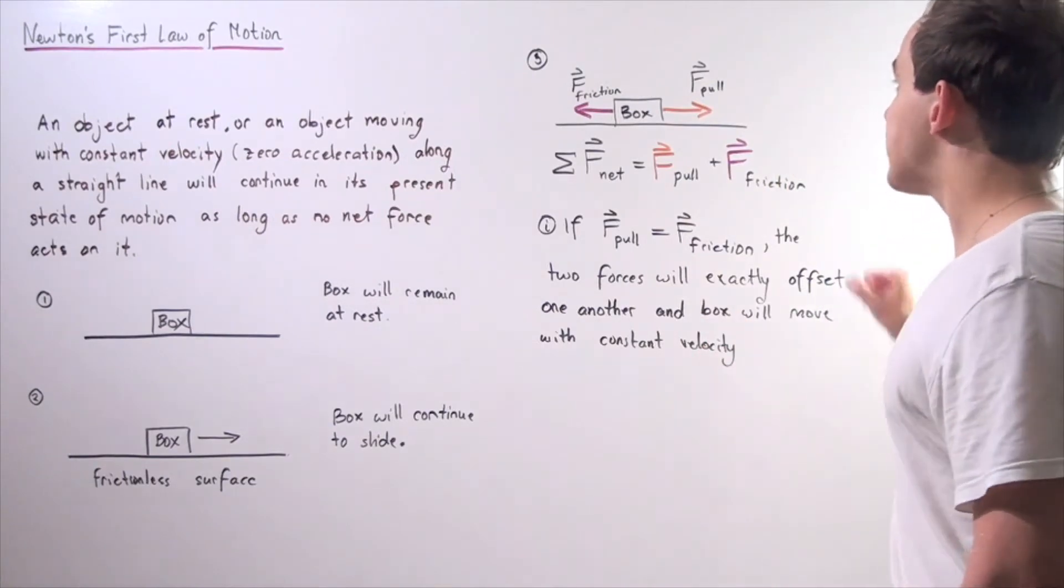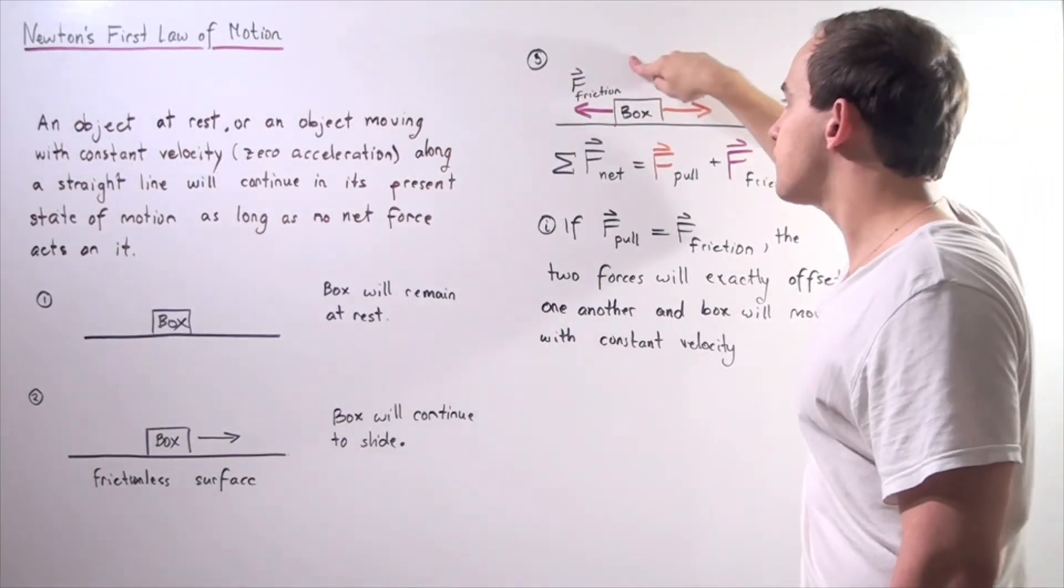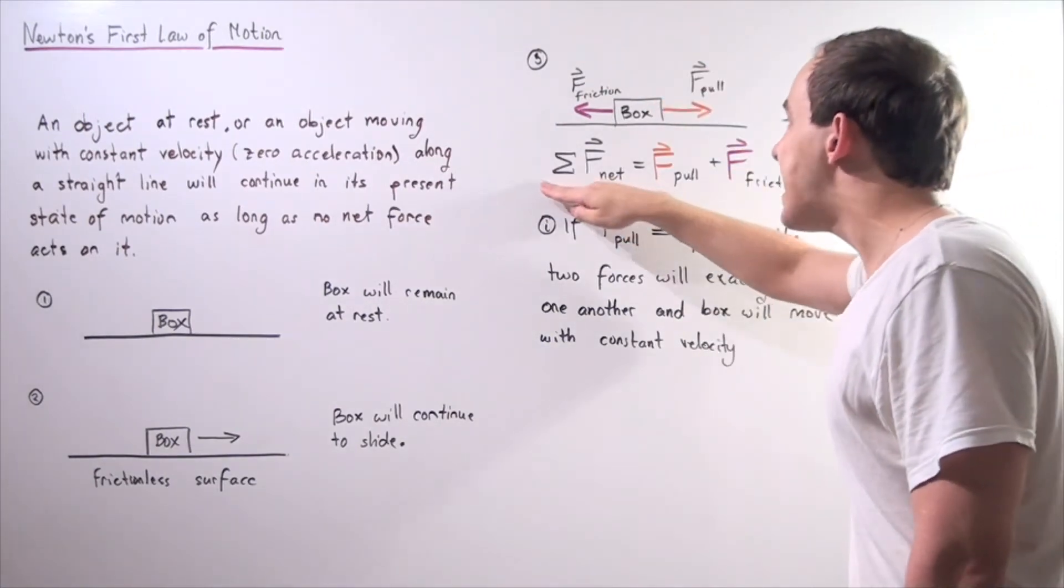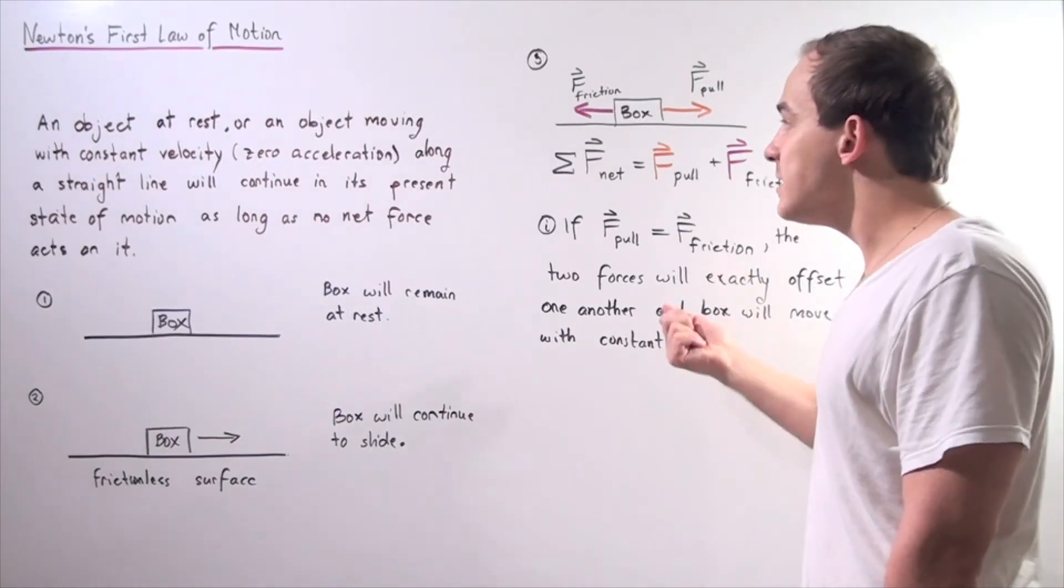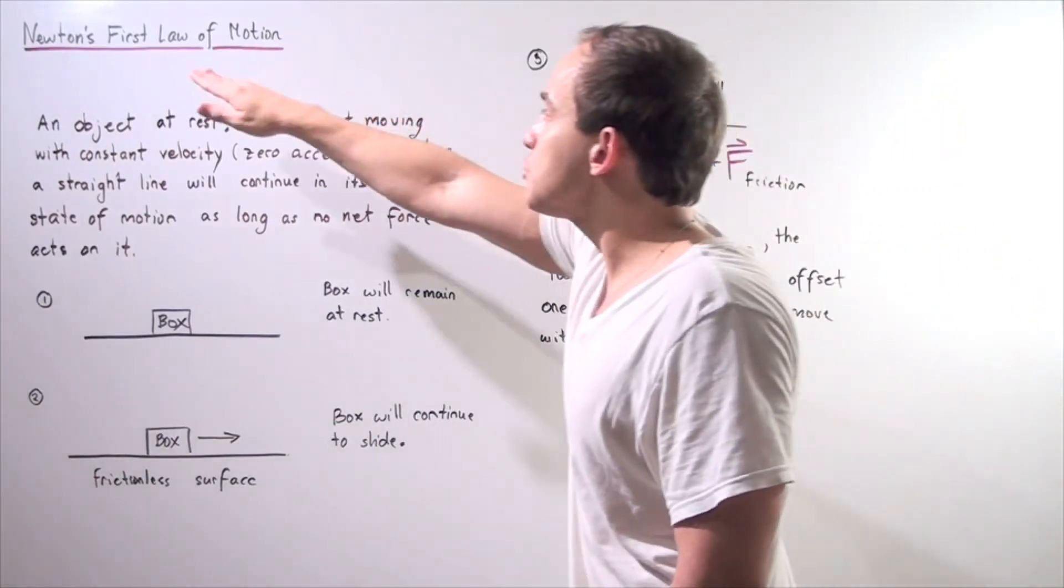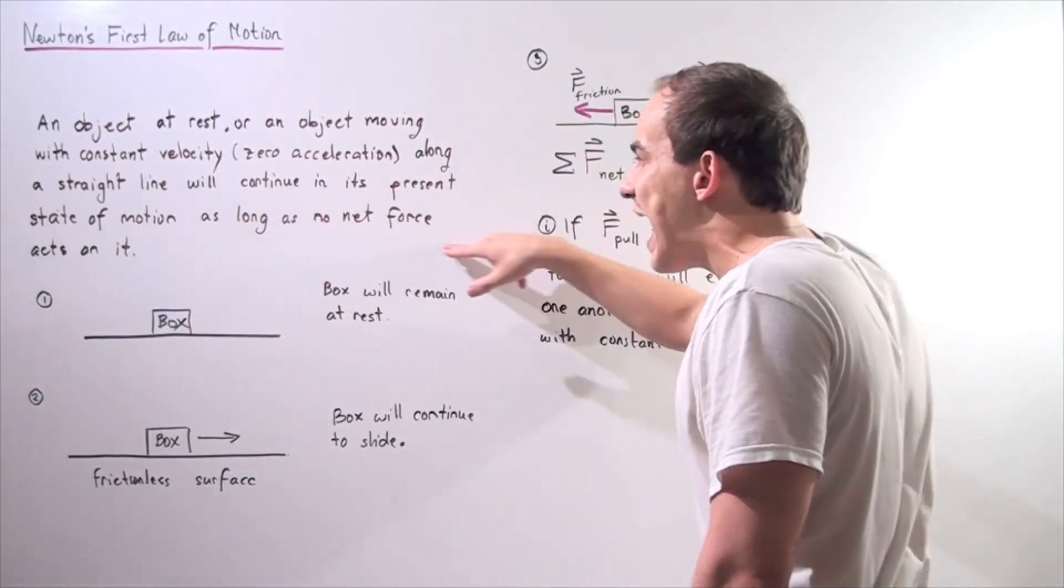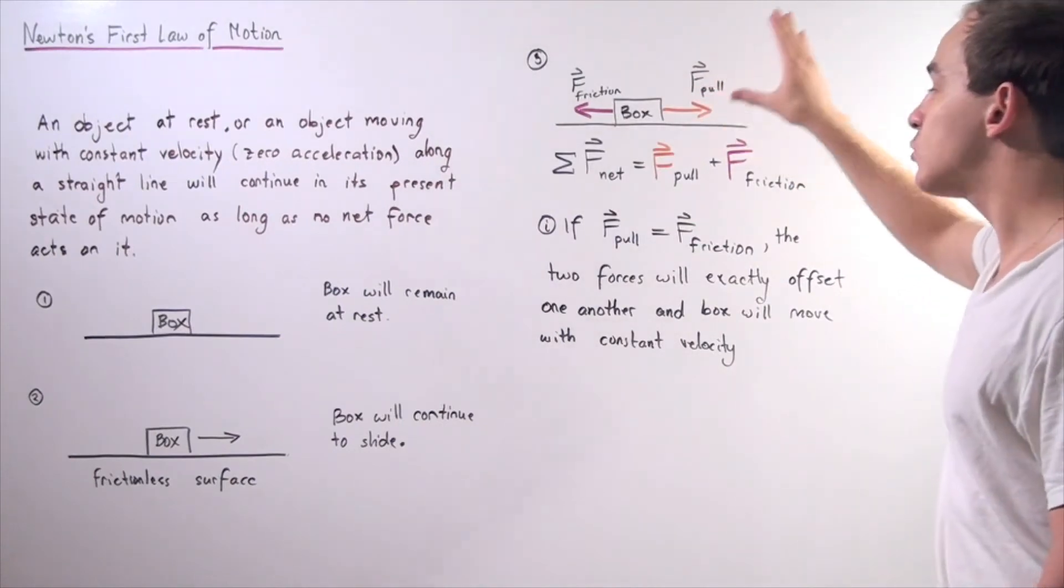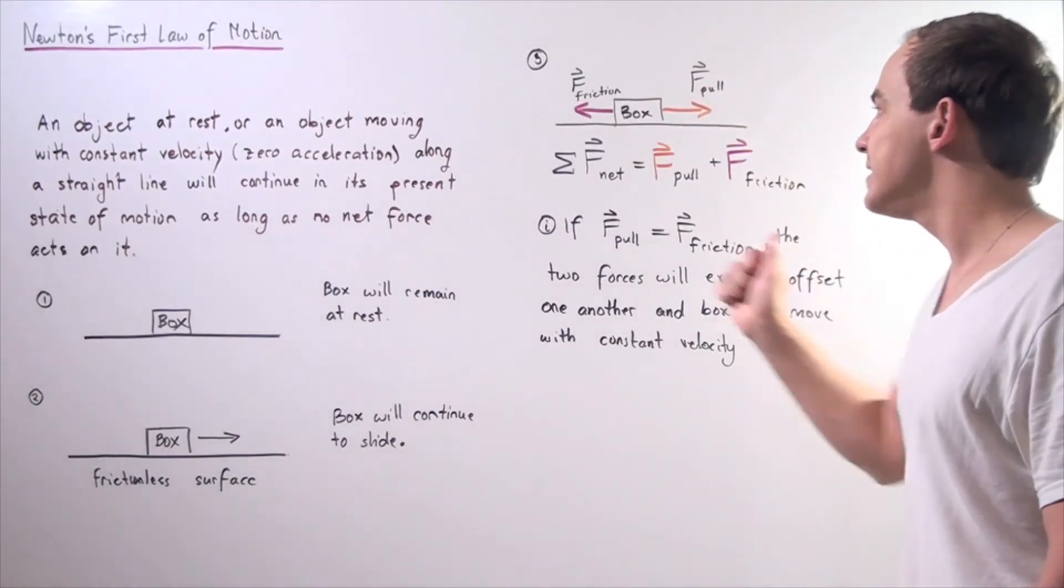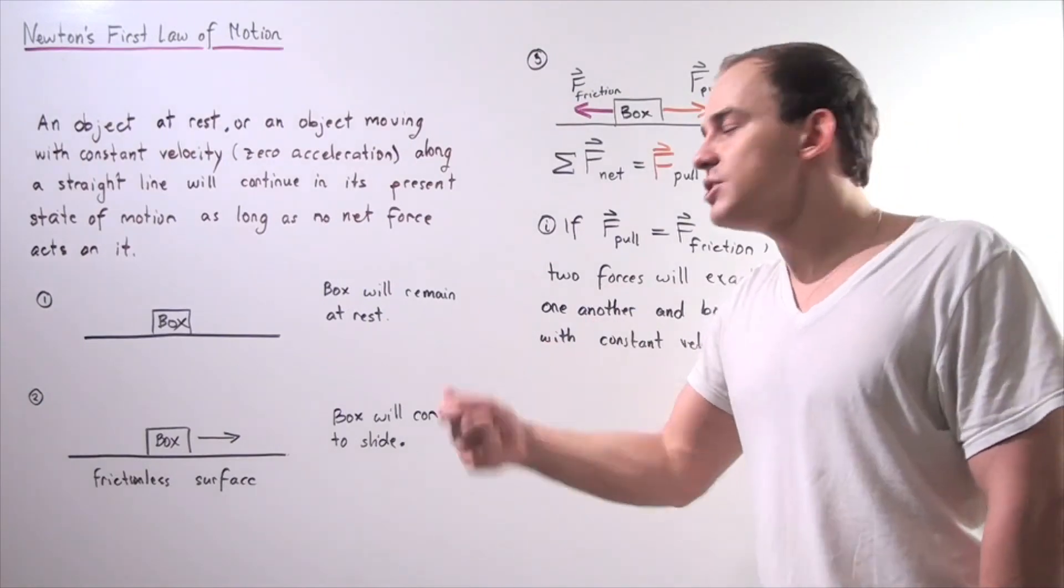Now let's suppose that my force of the pull was higher than the force of friction. That means our net force would be greater than zero, it will be positive. And in this case, first law of motion no longer holds true because we have a net force. And so my object will begin to accelerate in the positive direction. Its velocity will begin to increase.